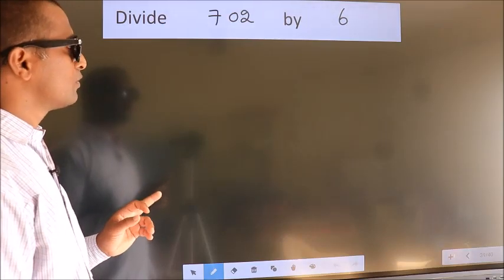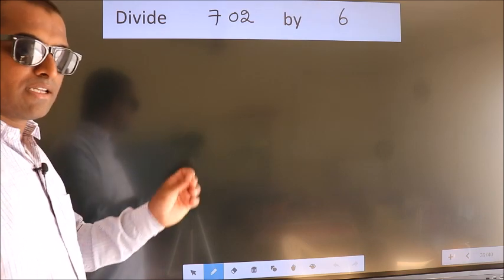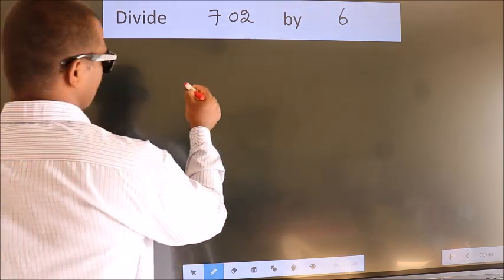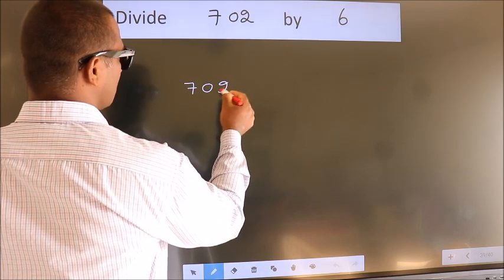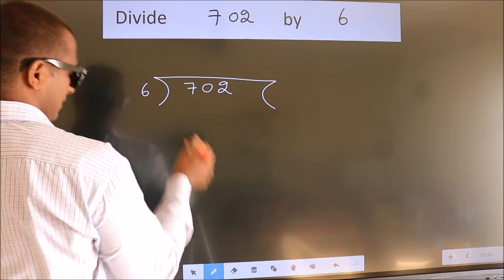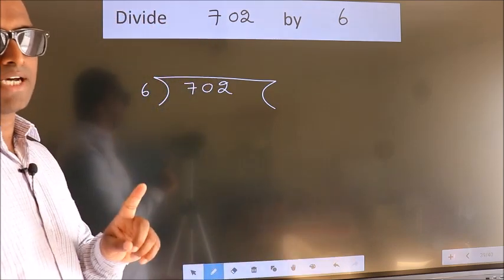Divide 702 by 6. To do this division, we should frame it in this way. 702 here, 6 here. This is your step 1.